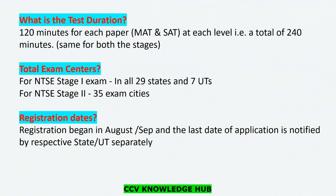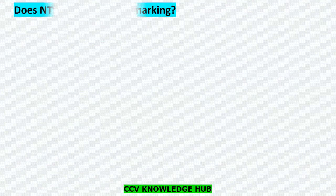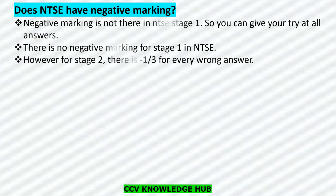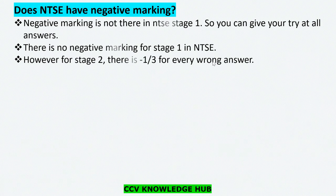Registration dates generally open in August and September every year, and respective schools will provide registration details. Regarding negative marking: there is no negative marking for Stage 1. However, for Stage 2 there is a deduction of one-third mark for every wrong answer.